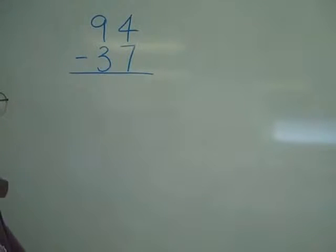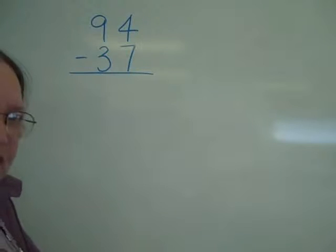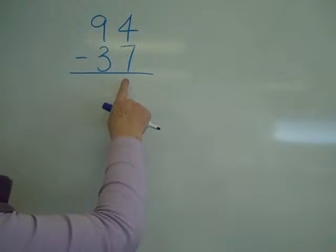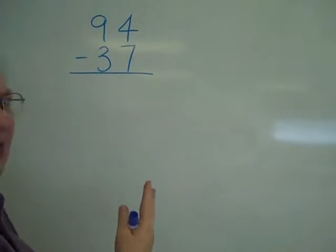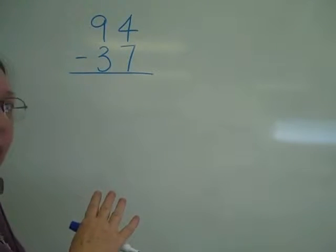This time we want to look at some non-traditional subtraction. A traditional method of subtraction is that you would look at your 1's place and say, 7 from 4, I can't do that, so you have to do some borrowing.